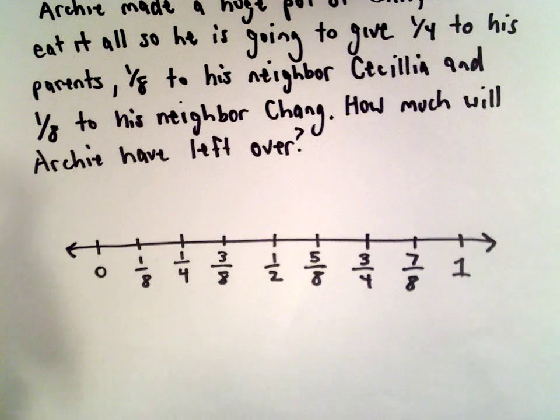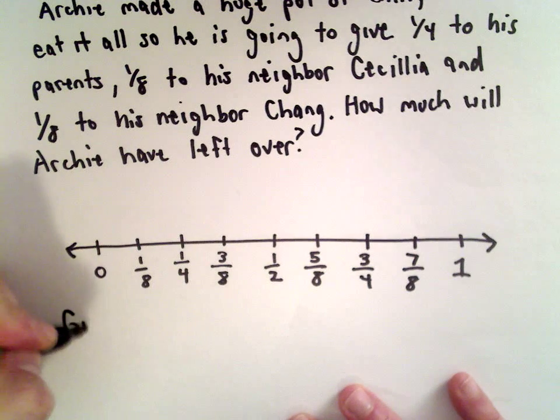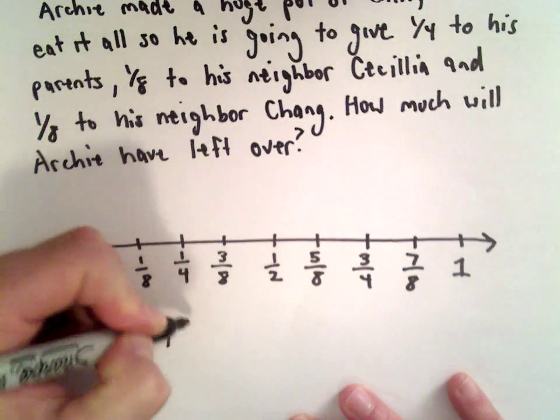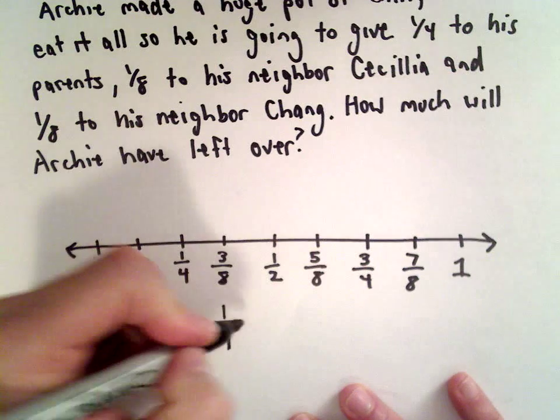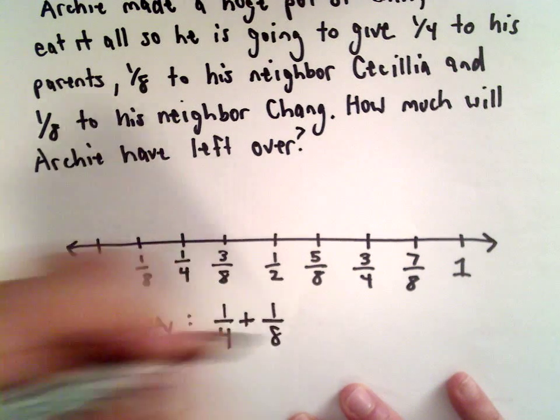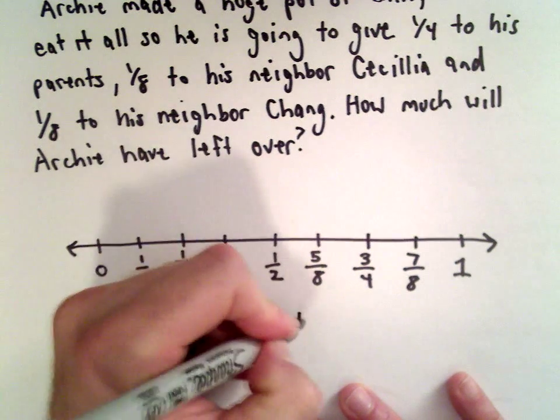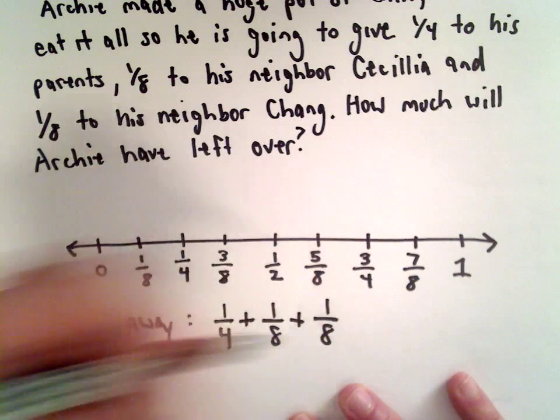Well, let's figure out how much he's going to give away. He's going to give away one-fourth of it to his parents, plus another one-eighth of it to Cecilia, and another one-eighth of it to his neighbor Chang.